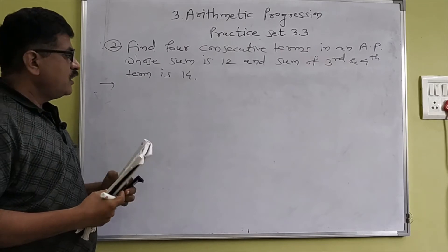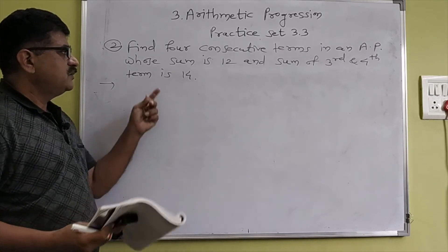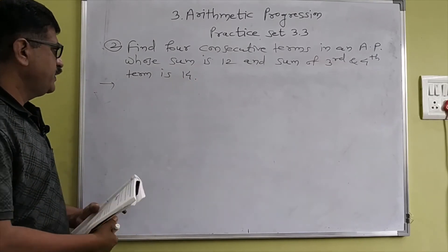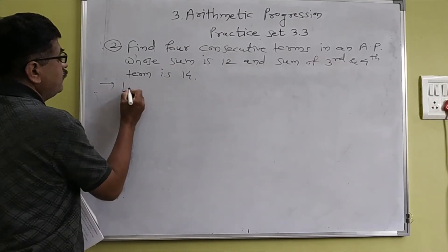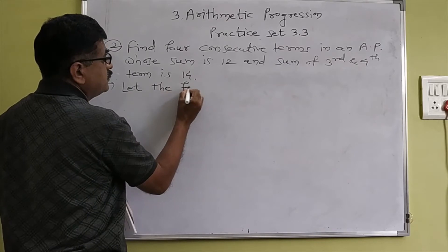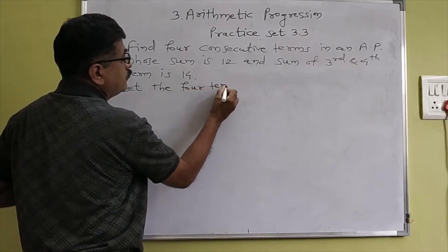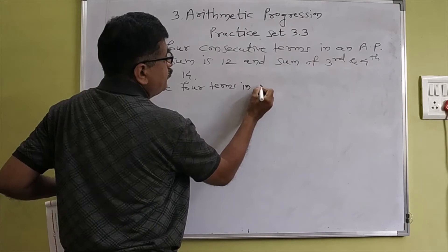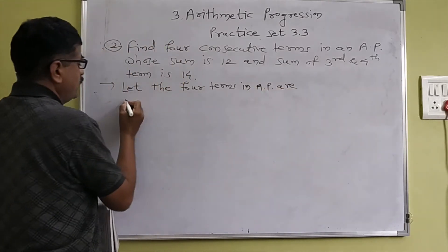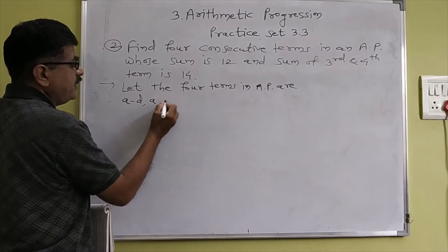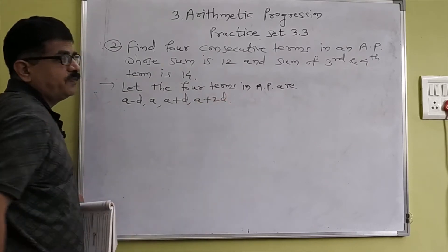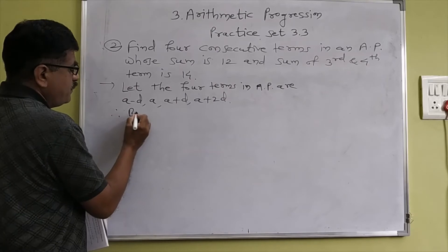Here we are given: assume the four terms in AP are A minus D, A, A plus D, and A plus 2D. Let the four terms in AP be: first A minus D, second A, third A plus D, fourth A plus 2D.